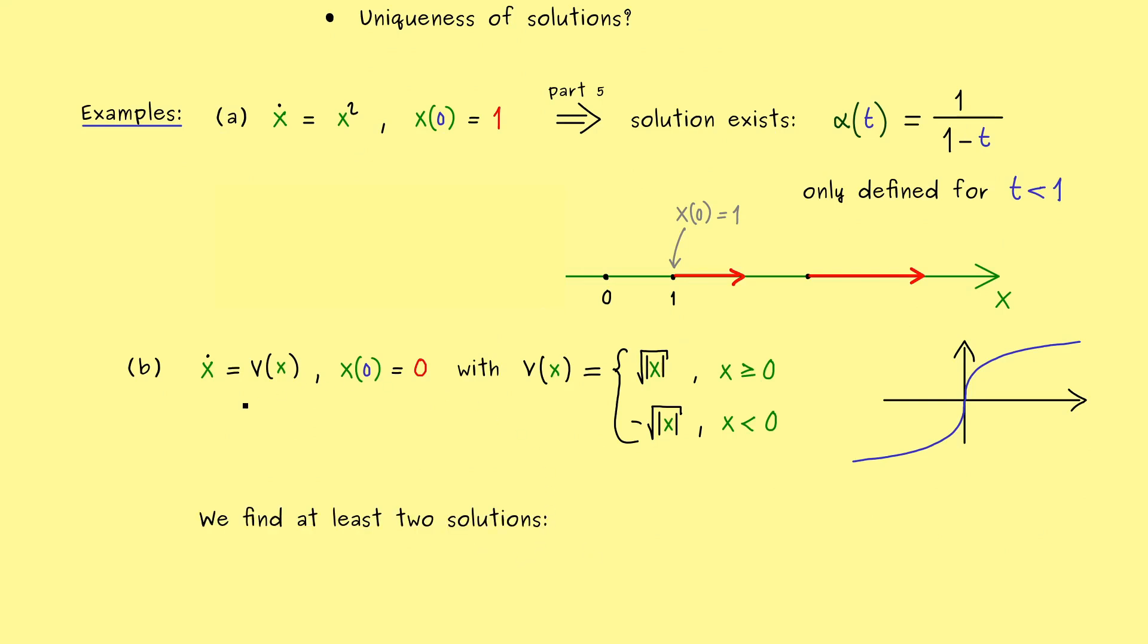So the existence of solutions is indeed not a problem, but we find at least two different solutions for this initial value problem. One you might immediately see, because we can stay at 0 as long as we want. In fact, the vector field at 0 is equal to 0, so we don't have any movement there.